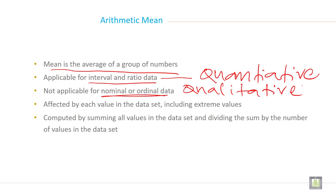Affected by each value in the data set including extreme values and computed by summing all values in the data set and dividing the sum by the number of values in the data set.